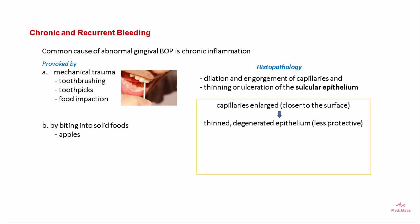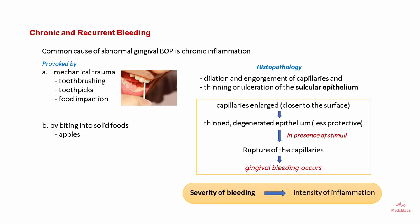There is thinning and degeneration of the epithelium, which makes it less protective, and the presence of any stimuli can rupture these capillaries, resulting in gingival inflammation and bleeding. The severity of bleeding is directly associated with the intensity of inflammation — the more the inflammation, the more severe the bleeding.